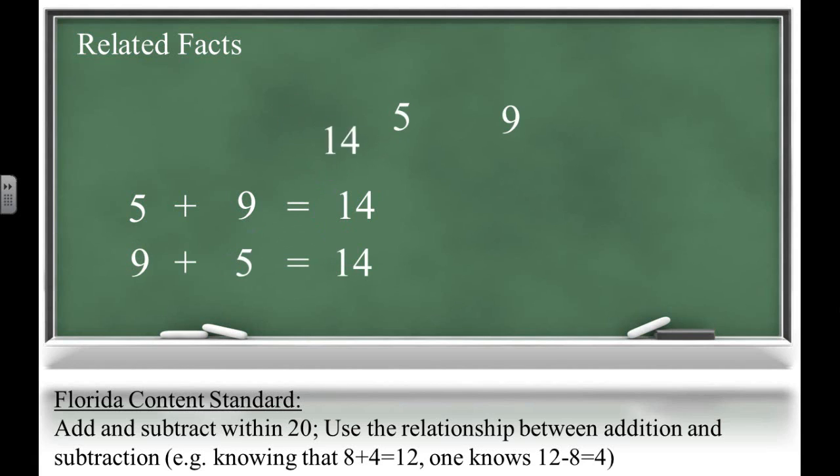We can also discover relationships with subtraction and write two related subtraction facts with these same three numbers. These four facts will then come together to form what's called a fact family.